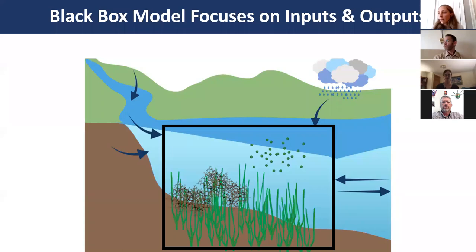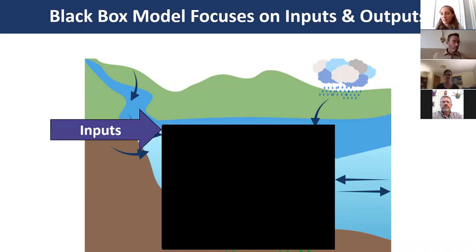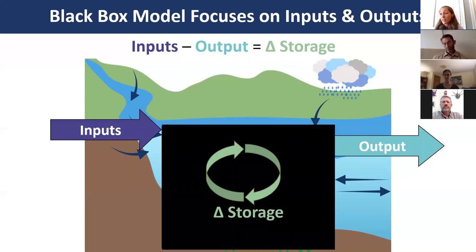A black box model looks at how an ecosystem functions by ignoring what's going on inside and instead measuring all inputs and outputs. The difference gives a delta storage term, helping us infer whether the system is retaining inputs or exporting and producing additional materials. It treats the estuary as a single vertically and horizontally well-mixed box, assuming anything that enters has an equal chance of being processed and exported.